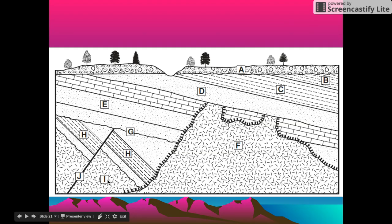So we have these letters over here. So our I had to have happened first. And then you're like, well when did this fault happen? But you need to look at what layers the fault goes through. So the fault goes through H. So it must have been I, then H, and then we had our fault J go through.